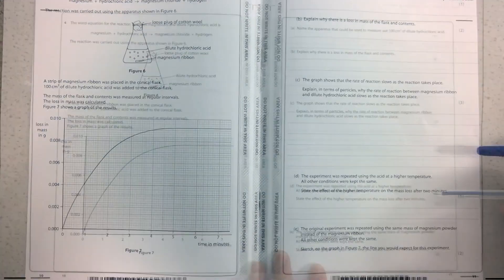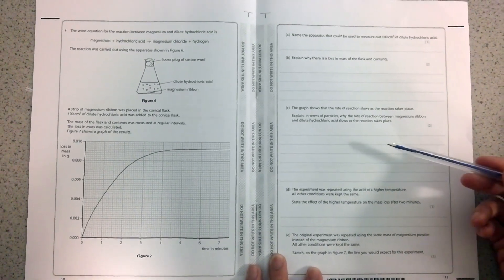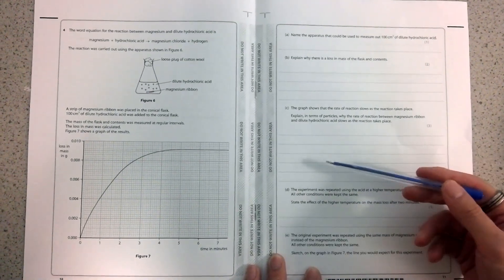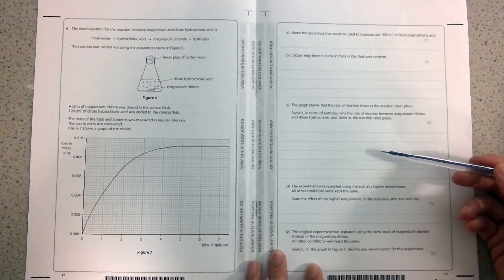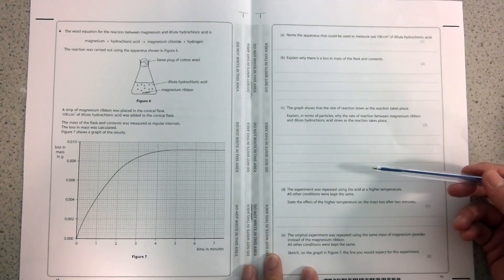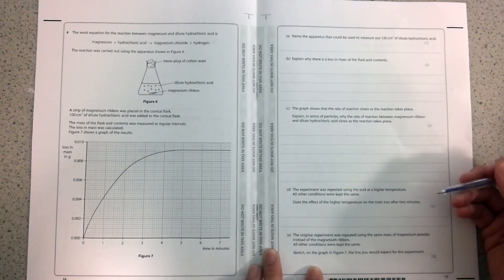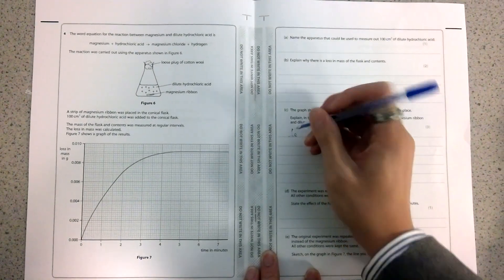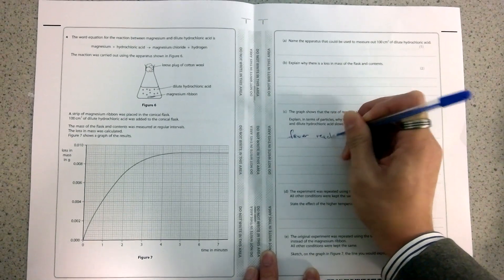you need to mention that it shows that the rate of reaction slows as the reaction takes place, in terms of particles. At the start, all the particles are reacting, so the collisions are frequent. But for the first mark, you need to mention that there are fewer reactants.